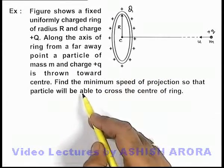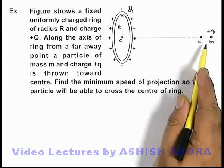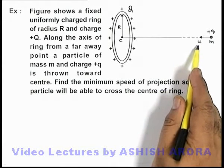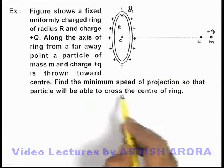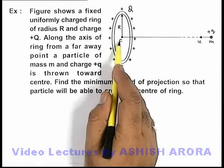We are required to find the minimum speed of projection of this particle, we are required to find the value of u, so that the particle will be able to cross the center of the ring.